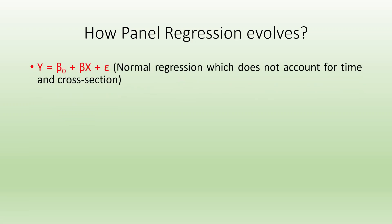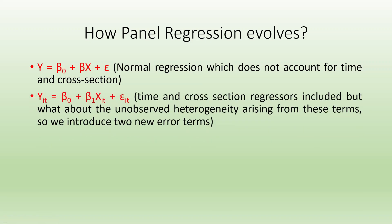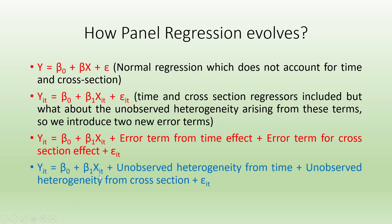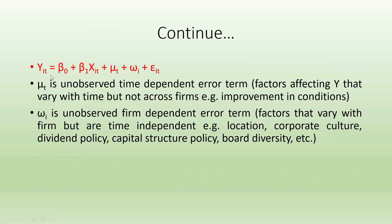How does panel regression evolve? Normal OLS: y = β₀ + βx + ε, which does not account for time and cross section. If we consider the effect of time and cross section regressors: y = β₀ + β₁X_it + ε_it. But to address unobserved heterogeneity, the error term ε_it is split into three parts: the error term from time effect, the error term from cross section effects, plus ε_it. So, y_it = β₀ + β₁X_it + μ_T + ω_i + ε_it. Here, μ_T is the unobserved time-dependent error term.